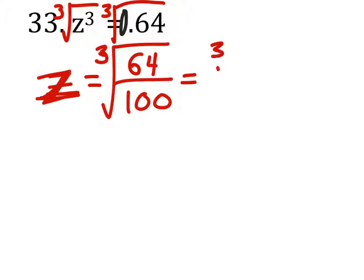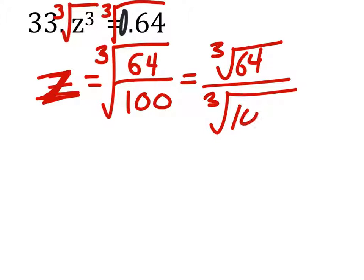Alright, so now we got the cube root of 64 over the cube root. On this one, the cube root of 64 is 4, and the cube root of 100 is? The cube root of 100. We can't simplify that any further.